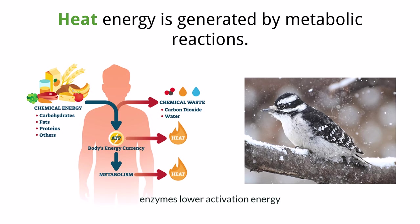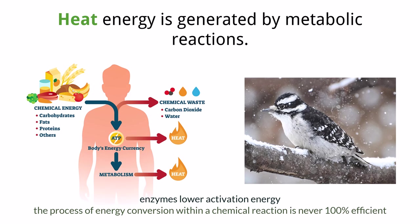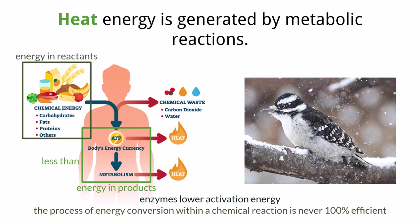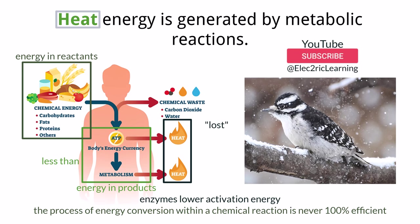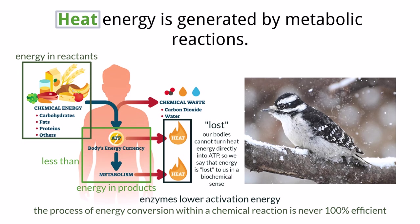Enzymes support chemical reactions by lowering activation energy, but as chemical reactions take place and energy is converted from one form to another, the process is never 100% efficient. Within metabolic reactions, the energy contained within the products is always less than the total amount of energy the reactants started with. The energy that is lost was converted into heat. When some energy is converted into heat, we say it is lost — not in the sense that it disappeared, which would break the laws of physics, but lost to us because it is in a form we can no longer directly use within our cells.